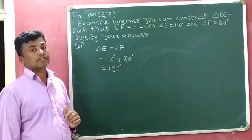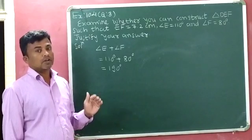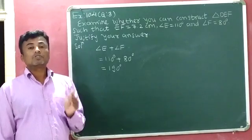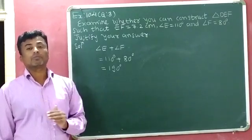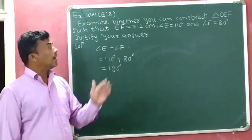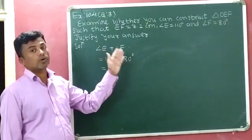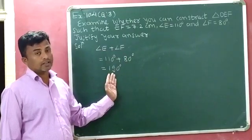So this triangle construction is not possible. Because according to the angle sum property, the sum of three angles of a triangle is 180 degrees, and here the sum of just 2 angles is 190 degrees.